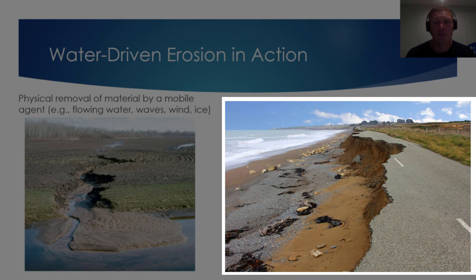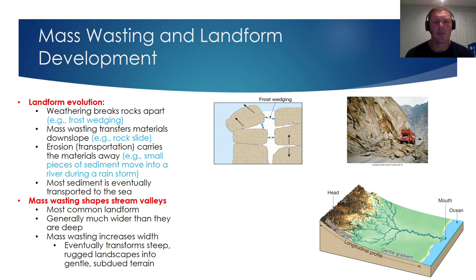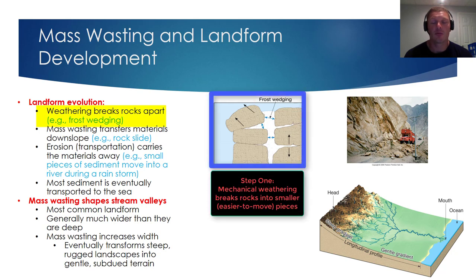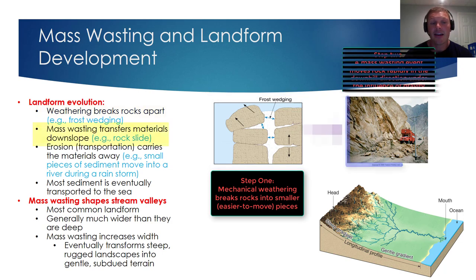Let's talk about the relationship between mass wasting and landform development. The starting point for landform evolution is weathering — simply thought of as the breaking apart of rock. Frost wedging is perhaps the most important mechanical weathering process: liquid water can get into a rock fracture, and if it freezes, water expands and exerts an outward pressure on the walls of the fracture, widening it. So let's suppose frost wedging breaks a rock into smaller pieces.